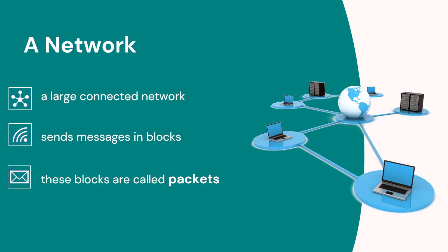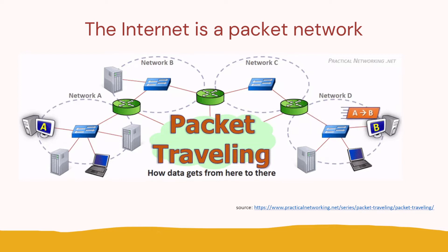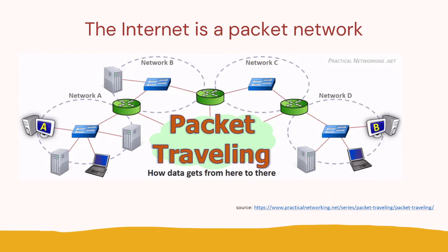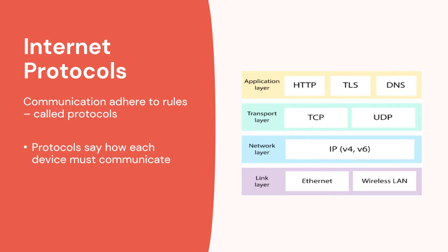So what is the Internet? Well it's a very large connected network, or a network of networks if you like, and it sends messages in blocks — we call these blocks packets. The Internet is an interconnected network of networks that sends packets across these networks, where these packets contain data. To make this work there are many types of standards and rules that everyone sticks to, and we call these protocols. Protocols can be described in different layers, but we need these protocols so every device can communicate with each other all over the world.